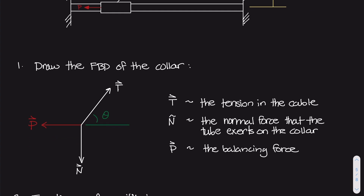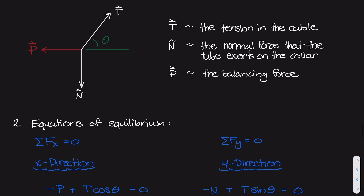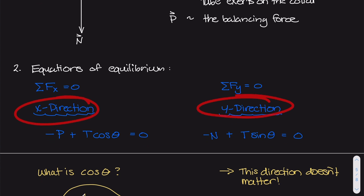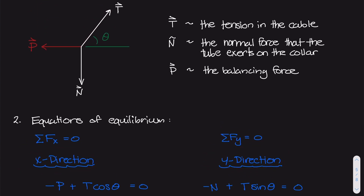Once we've drawn the free body diagram, we move on to equations of equilibrium — part two. We know this system needs to stay in equilibrium, so all forces in the x direction and all forces in the y direction should equal zero. In the x direction, we have this P force acting to the left, written as negative P, and the tension force has an x component equal to T times cosine of theta. The normal force acts straight downward, so it's excluded from the x-direction equation.